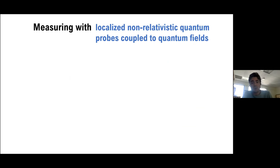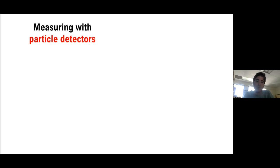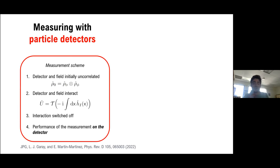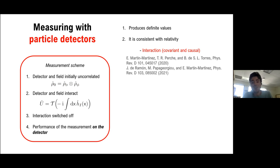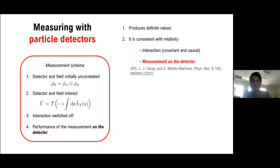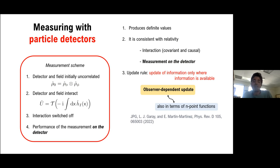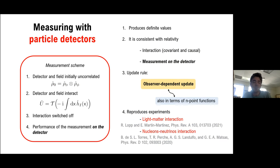This problem can be addressed in several ways, but one possible way is to do it using localized and non-relativistic quantum probes that can couple to quantum fields, also known as particle detectors. With particle detectors we can build a measurement scheme in which we let the detector and the field interact, and that way the detector gathers information from the field through the interaction. After the interaction is switched off, we can perform a measurement on the detector, and now we know how to do that because the detector is just a standard quantum mechanical system. Now a measurement theory based on particle detectors is a proper measurement theory because first it produces definite values because we are performing a projected measurement on the detector. It is consistent with relativity because both the interaction and the measurement on the detector are, at least within the regimes in which the detector model itself is valid. We also provide an update rule that turns out to be an observer-dependent update but can also be written in terms of an update of the n-point functions that characterize the state of the field. And finally, it reproduces experiments because detector models have been shown to be good models for light matter interaction and nucleus neutrino interaction.